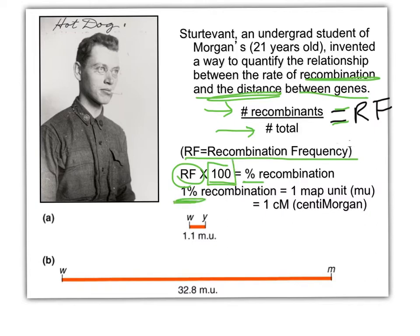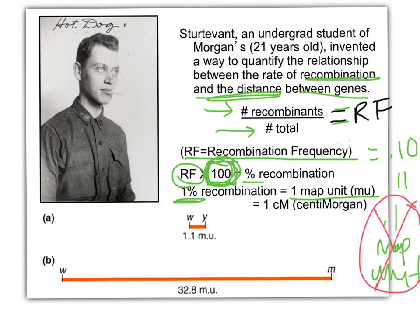One percent recombination equals one map unit. Recombination frequency is going to be a decimal, so if we want to express it as a percentage — and we do — we must multiply it by 100. You can't just take 0.1 RF and say that's 0.1 map unit. You have to make this a percent.